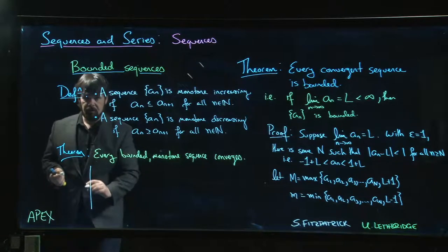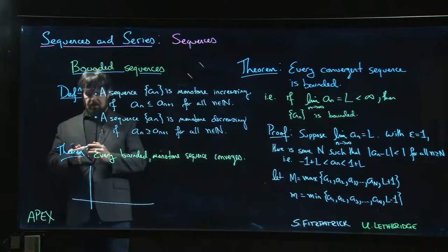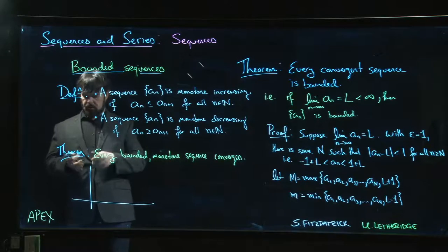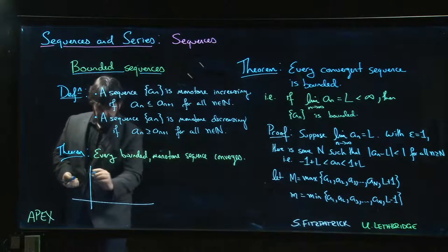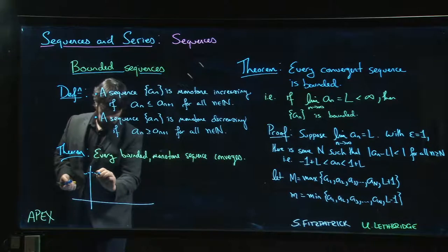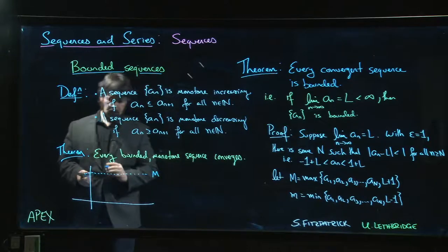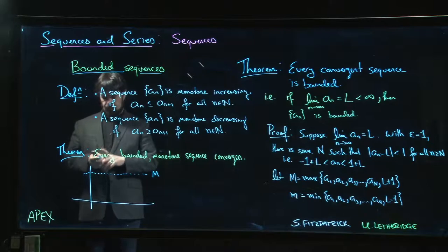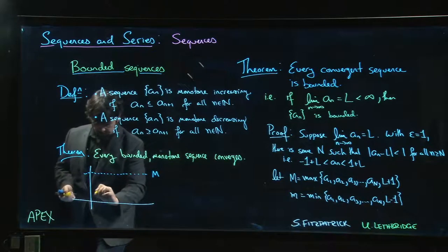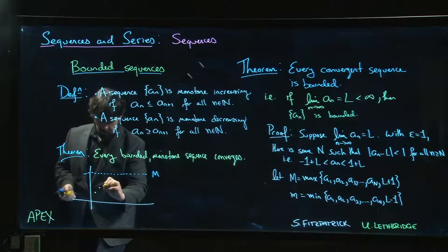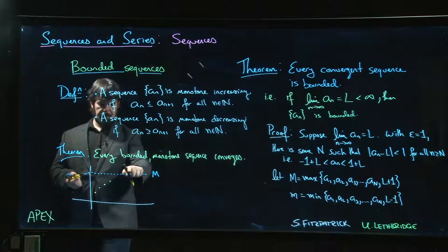But intuitively, it's pretty clear why this has to work. If we think about a bounded monotone increasing sequence—if it's increasing and bounded above, if that's our upper bound and our sequence is increasing, maybe we start here, we go up, it's increasing, it's increasing.